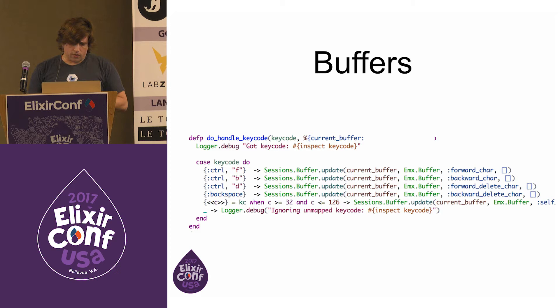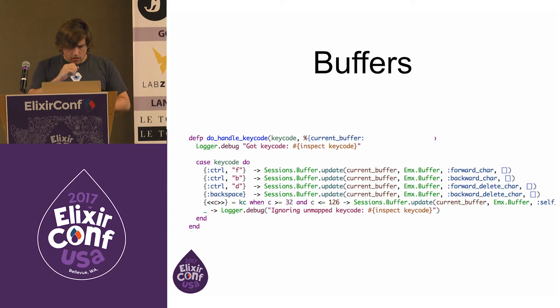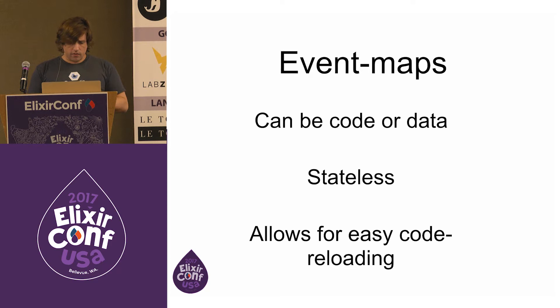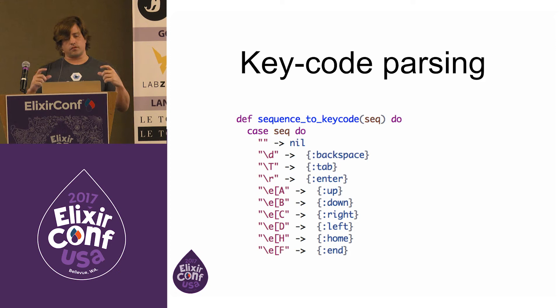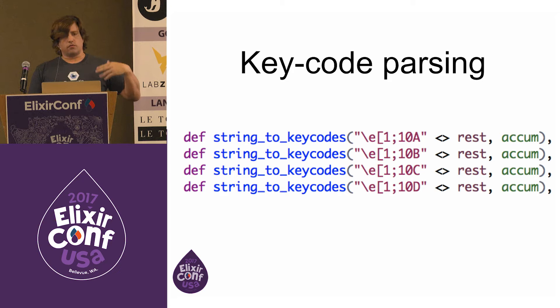For example, you've got things like forward char, backward char, forward delete char, backward delete char — that's what happens when you hit right arrow, left arrow, backspace, Control-D, or X in vi. Event maps are stateless and can be coded data, which allows for easy code reloading. Something really nice about Elixir is it made key code parsing really easy. That escape sequence thing — when an up arrow comes out of your keyboard, it actually sends a couple of characters which you have to interpret. Pattern matching made it really easy to go both directions.